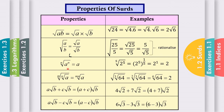Property number 3: if you have the nth root of A to the power of n, this equals A. For example, the 5th root of 2 to the power of 5 equals 2. This is because the 5th root can be written as the power of 1/5, so the exponents cancel, giving you 2 to the power of 1, which equals 2.